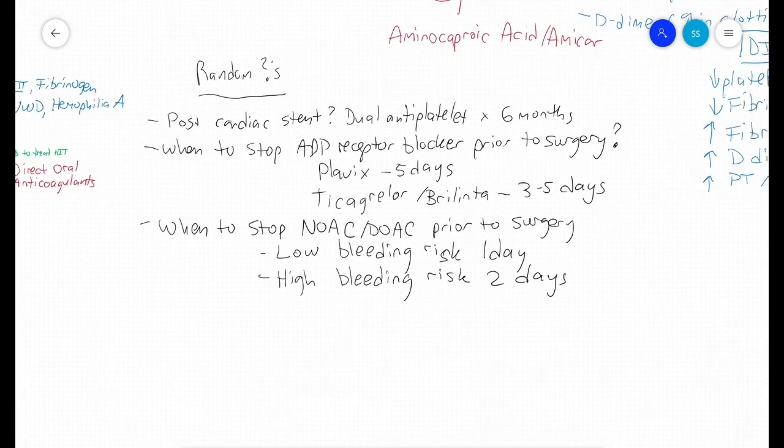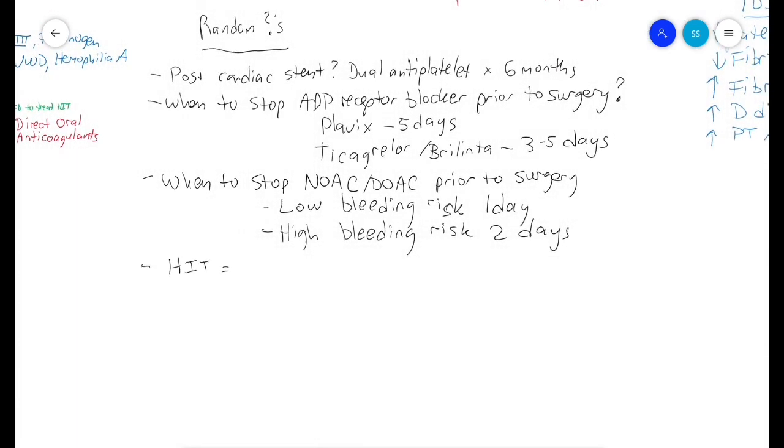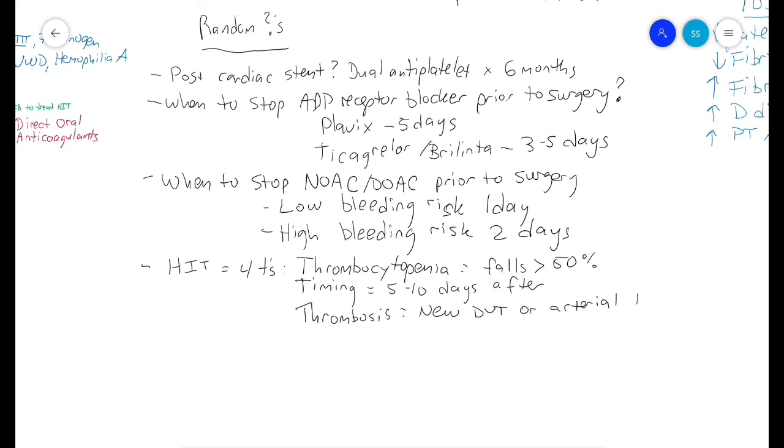Remember that for HIT (heparin-induced thrombocytopenia), the decision to test is the 4 T's. Thrombocytopenia with fallen platelets greater than 50%, timing 5-10 days after initial exposure to heparin, thrombosis (classically a new DVT or arterial thrombosis which can happen in HIT patients, and skin necrosis at injection sites), and the last T is other - meaning you need to rule out other causes of low platelets such as drugs or DIC.